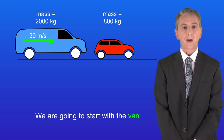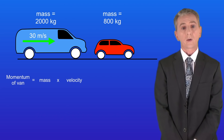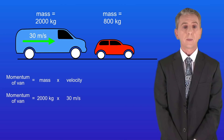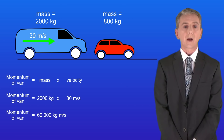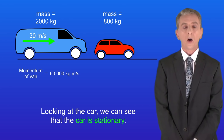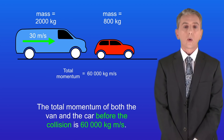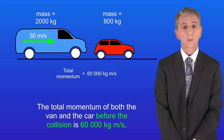We're going to start with the van. Remember that momentum equals the mass multiplied by the velocity. The mass of the van is 2000 kilograms and the velocity is 30 meters per second. That gives us a momentum of 60,000 kilograms meters per second for the van. Looking at the car, we can see that the car is stationary, so the momentum of the car is zero. So the total momentum of both the van and the car before the collision is 60,000 kilograms meters per second.